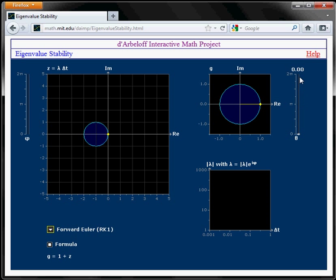Here is the theta scroll bar. So if we now scroll for theta from 0 to 2 pi, you can see the yellow dot traces out the unit circle in the G plane, and then also traces out the stability boundary in the lambda delta T plane on the left here.